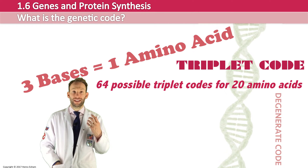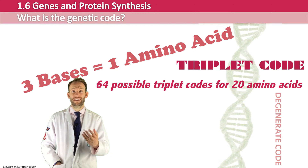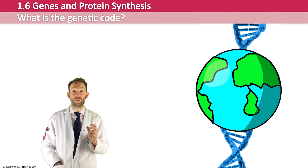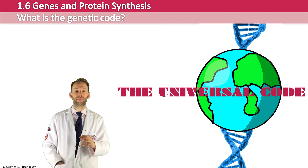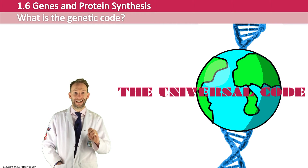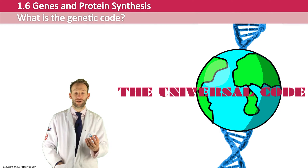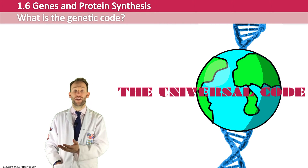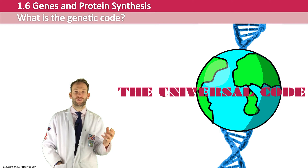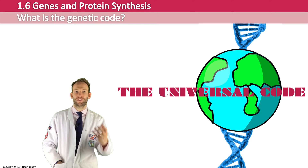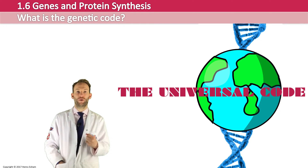One of the exciting things about the triplet code is that it works the same in all living organisms — with a couple of exceptions — so we call it the universal code. This means scientists can take advantage of this and actually take bits of code and swap it around. Imagine going back to the Lego model idea — you rip out a couple of instruction pages from one model and slip it into another, and suddenly you've got an airport with a laser cannon on it stolen from another model. So we can swap bits of code around to edit organisms, which is quite exciting.